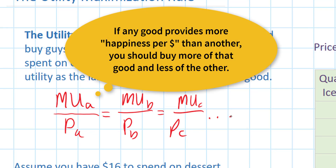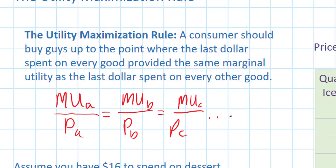What's the rationale here? Well, I'm getting more happiness per dollar — more bang for my buck — if I'm getting a greater marginal utility per dollar spent on a particular good. Therefore I should buy more of that good since it provides me more happiness as I consume more of it.